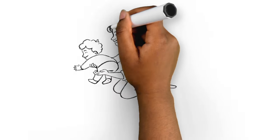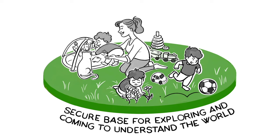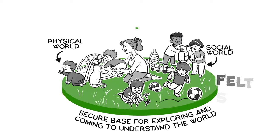Young children use their attachment figure as a secure base for exploring and coming to understand the world. When they feel safe, they will venture out and explore the physical world and the social world. That sense of felt safety is a crucial aspect to feel good about moving out into the world.